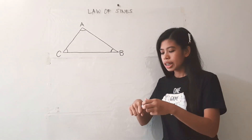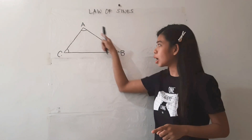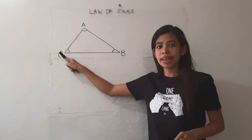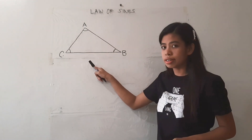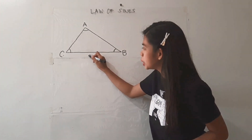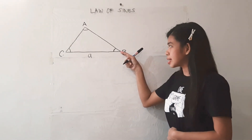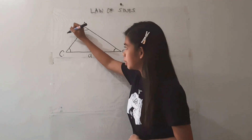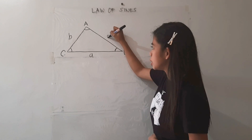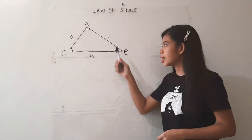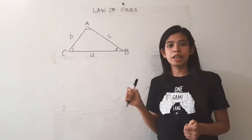Now, if this is oblique triangle ABC, we know that these capital letters denote the angles. So if this is angle A, the corresponding side or the opposite side would be side a, denoted by small letter a. If this is angle B, the corresponding side would be side b, and if this is angle C, this would be side c. The sides are denoted by small letters a, b, and c.